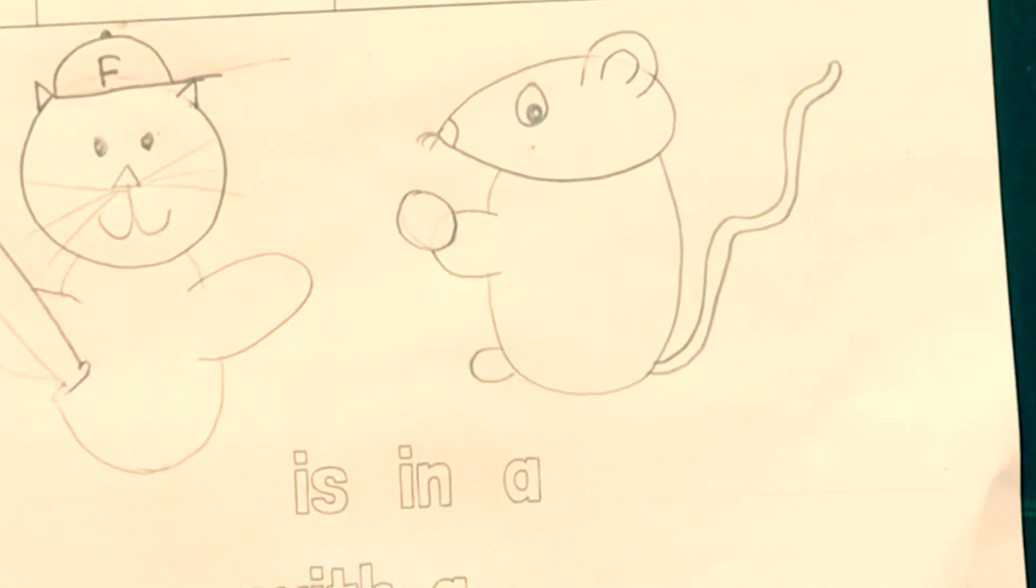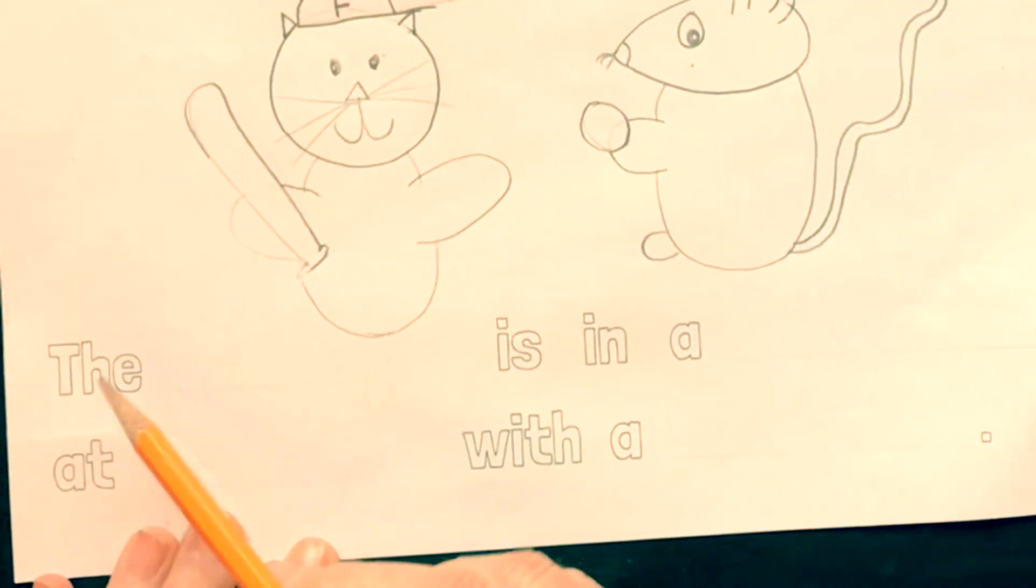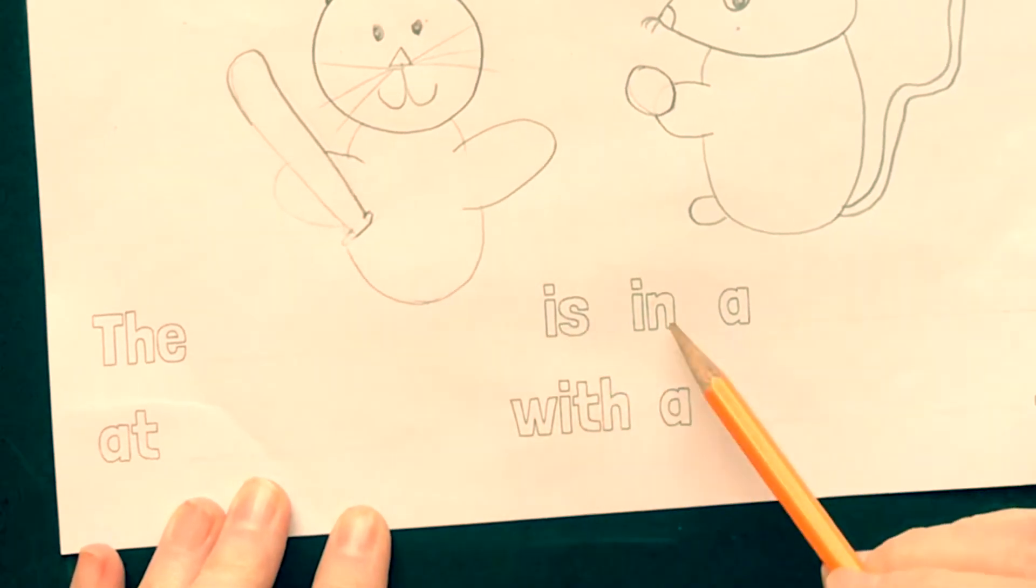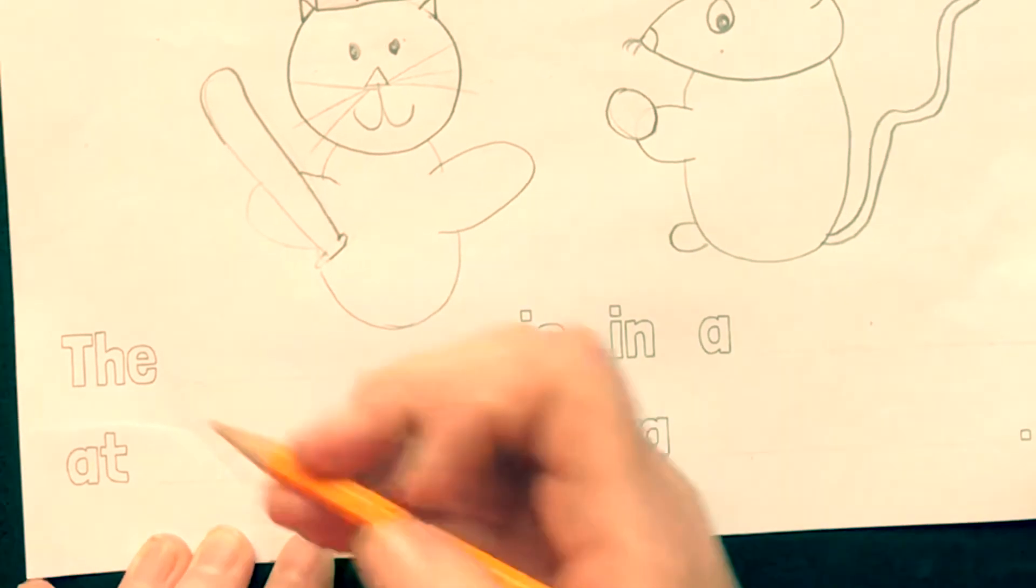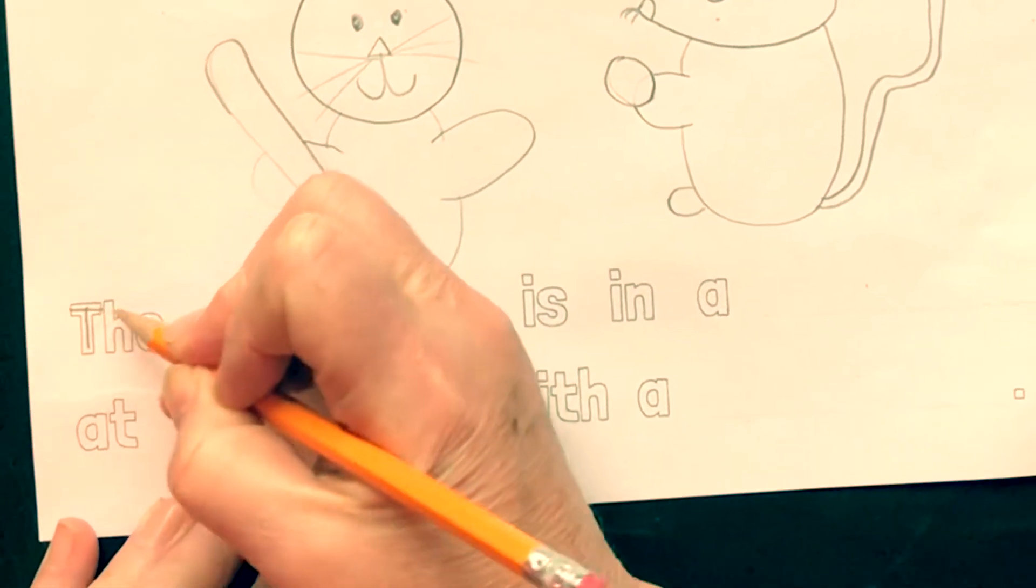Okay, and then before I color it, we're going to write that whole story down here. And it will say, the cat is in a hat. At bat with a rat.